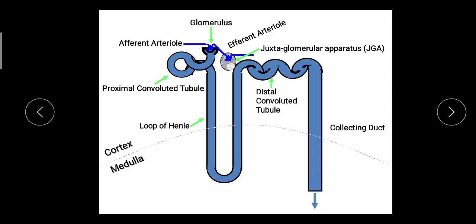The tubule consists of four major parts: first is the proximal convoluted tubule, second is the loop of Henle, third is the distal convoluted tubule, and last is the collecting tubules or collecting duct. I am not going into detail since you have studied the urinary system in APHE — I will just overview the process of urine formation.